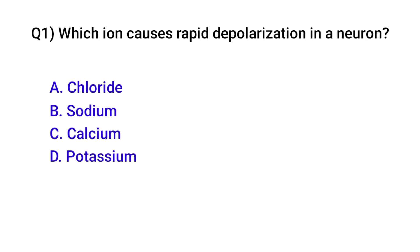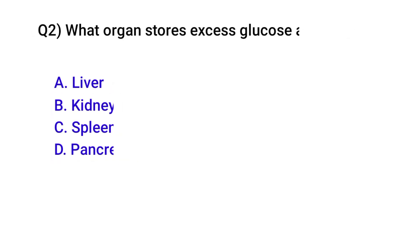Question number one: Which ion causes rapid depolarization in a neuron? Correct option is B: Sodium. Question number two: Which organ stores excess glucose as glycogen? Correct option is A: Liver.